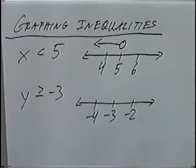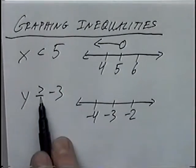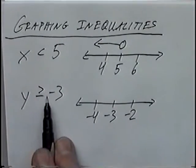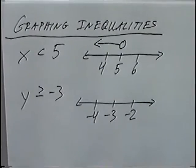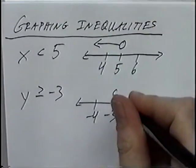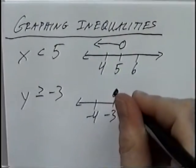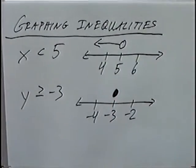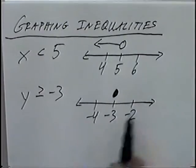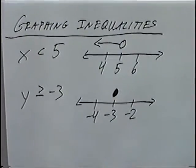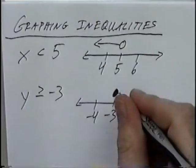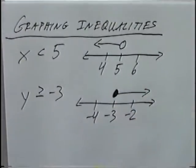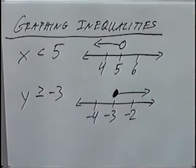For the circle, you can either have an open circle or a closed circle. In this case we have greater than or equal to. Any time you have the 'or equal to' — the line underneath the inequality symbol — the circle will be a closed or solid circle. The line will go to the right, and that's the graph for y is greater than or equal to negative 3.